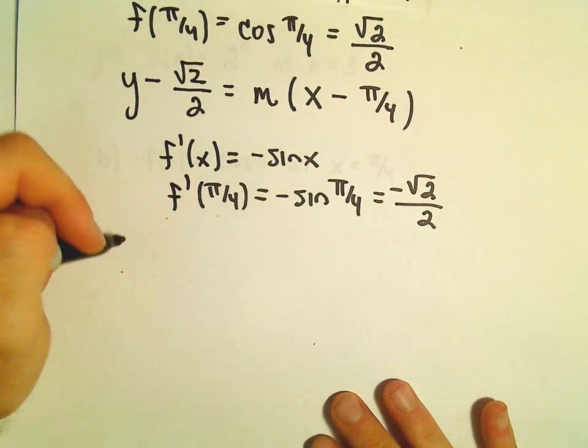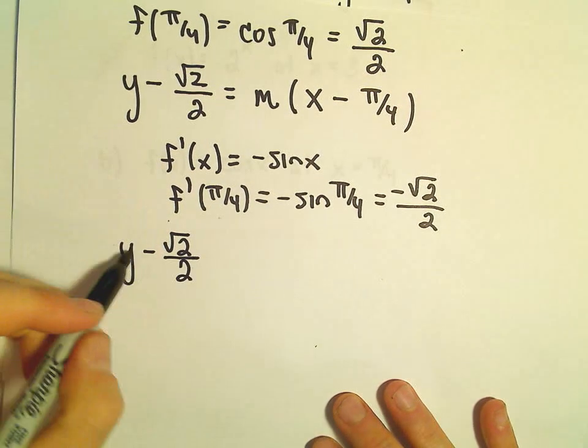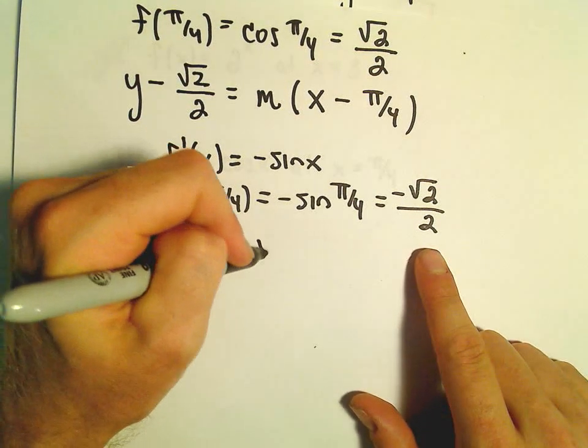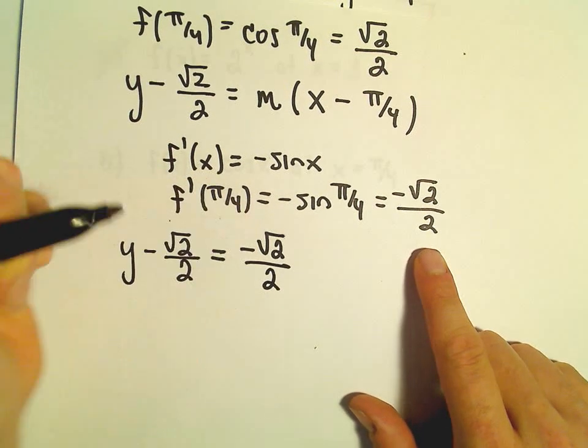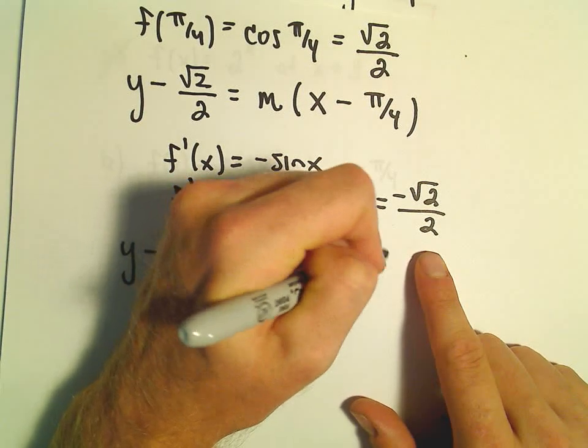Now we plug that in. We have y minus √2/2. The slope of our tangent line, our linearization, will be -√2/2, times (x minus π/4).